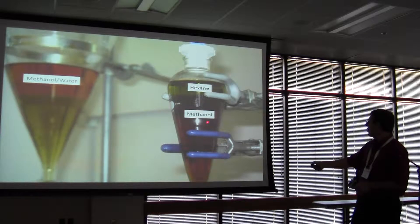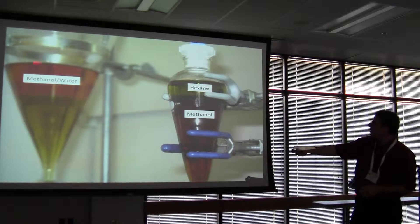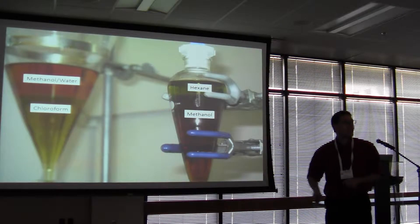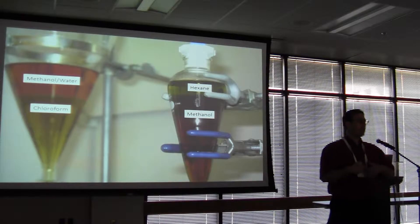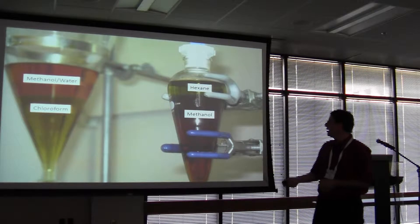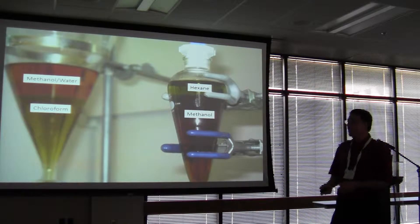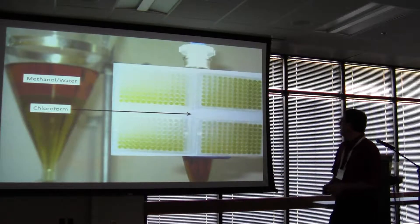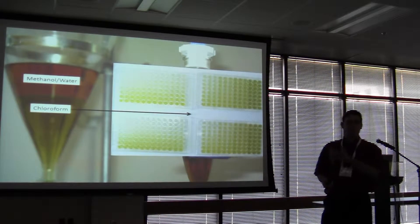Then taking the methanolic fraction, moving it over, diluting it with water, and partitioning against chloroform. The water washes primarily to get rid of tannins, which can confound many bioassays. Then the chloroform gets most of the interesting medium polarity molecules, rotovap it back down, and then used in experimentation.